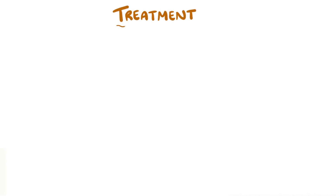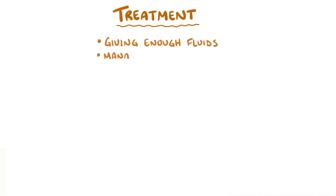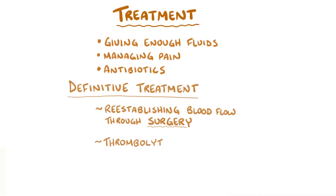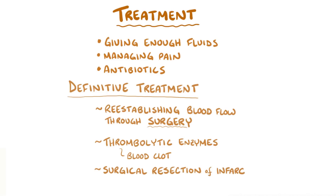Treatment of small bowel ischemia and infarction is generally aimed at giving enough fluids, managing pain, and giving antibiotics if needed. Definitive treatment requires reestablishing blood flow through surgery or by using a thrombolytic enzyme if a clot is suspected. Sometimes surgical resection of infarcted tissue might be needed as well.